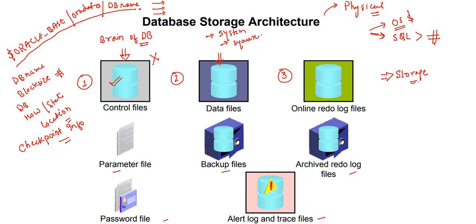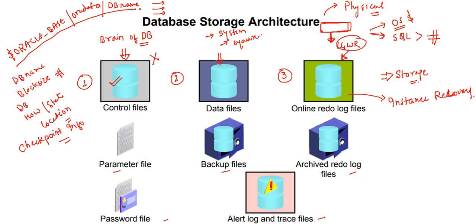The online redo log file is responsible for instance recovery. As you know, the redo log buffer cache is a memory location, and from it the LGWR background process captures all redo entries — both committed and uncommitted transactions — and writes them to the online redo log file. If the database server crashes and the data file is not lost, the instance can be recovered using these files, because all transaction data is present in the online redo log file.